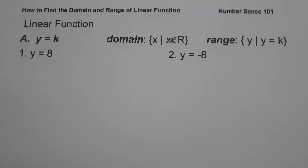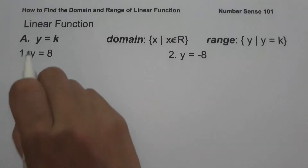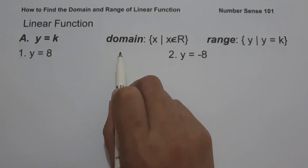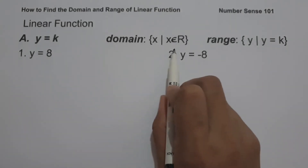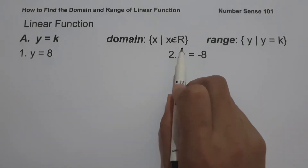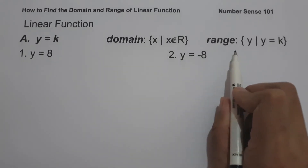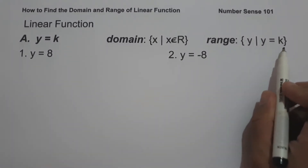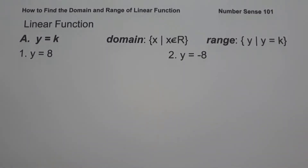The first case: if the linear function is written in the form of y equals k, the domain is the set of all real numbers, while the range is equal to the value of k. Let's have the first example — on number one we have y equals 8.